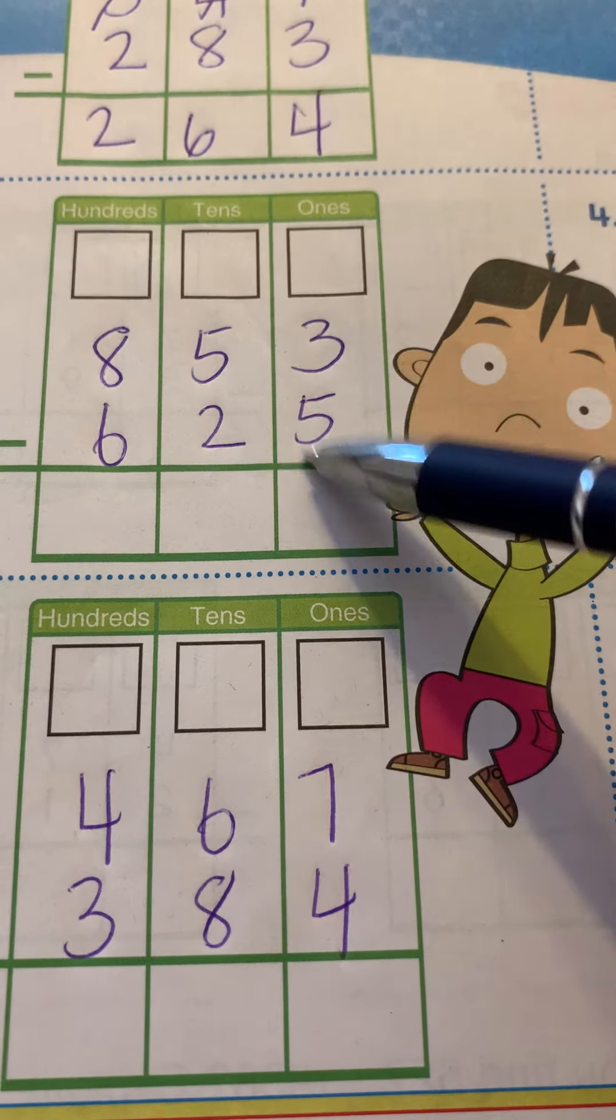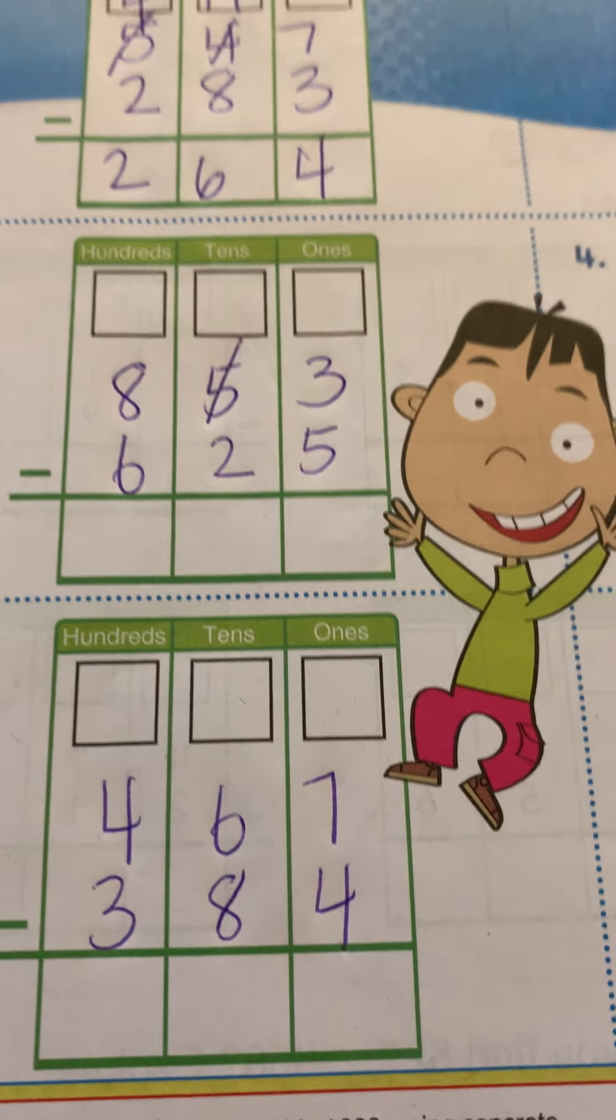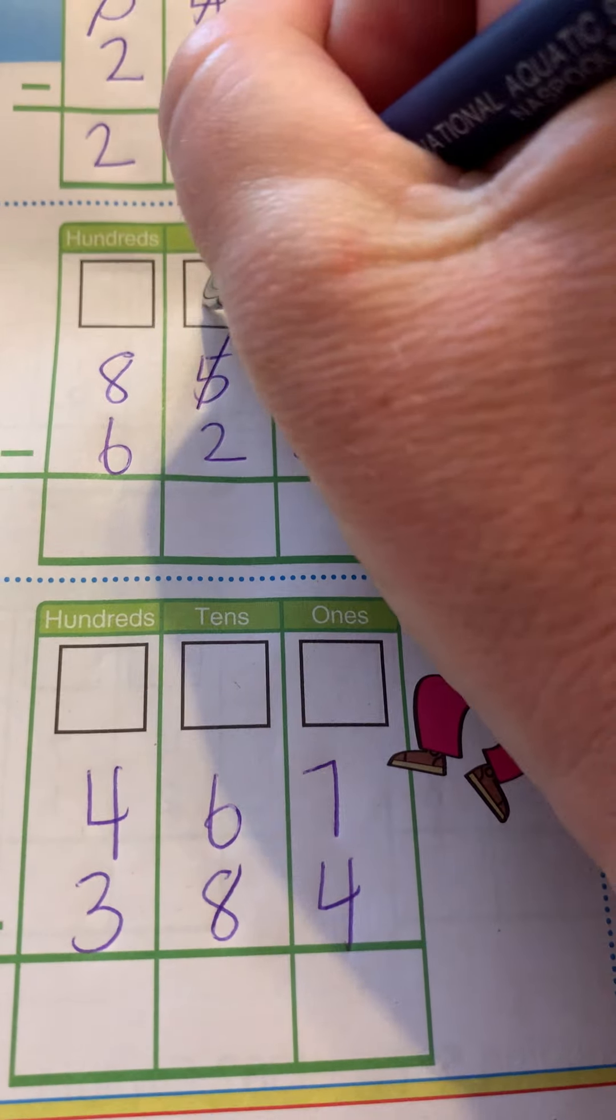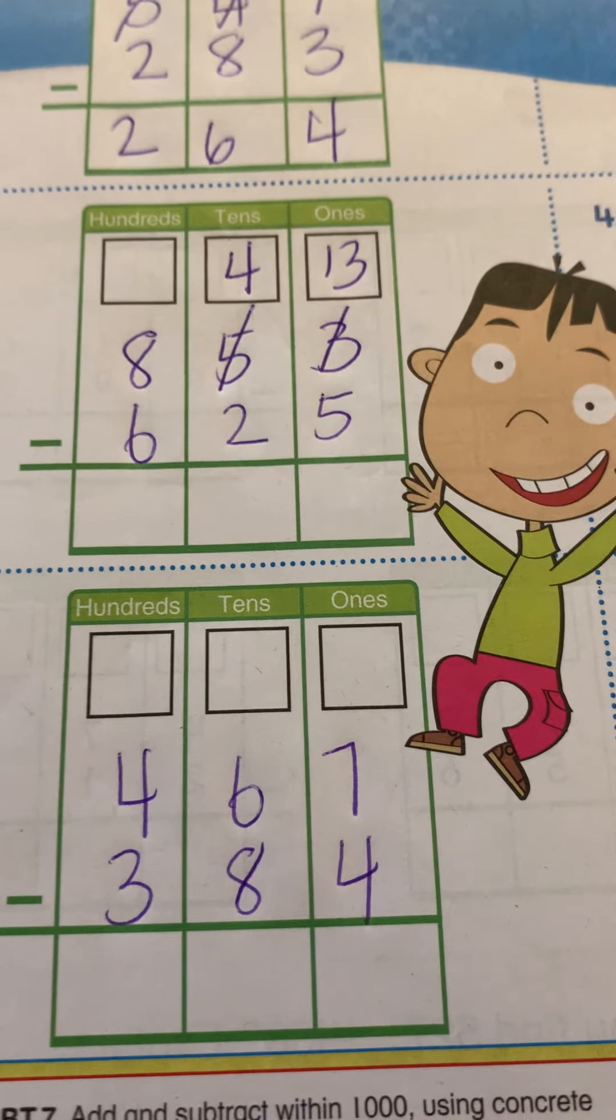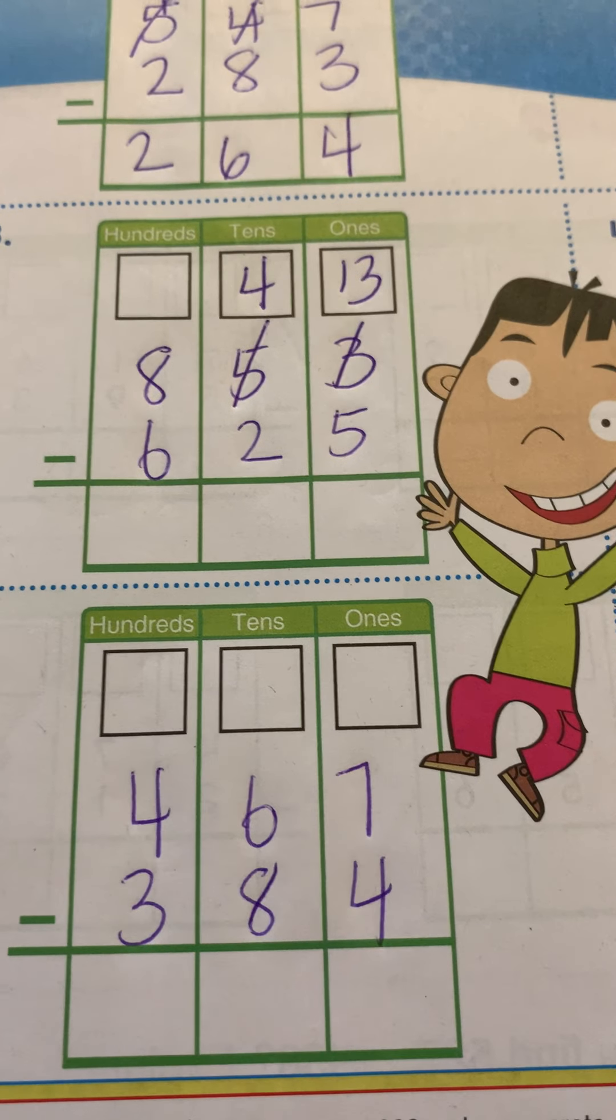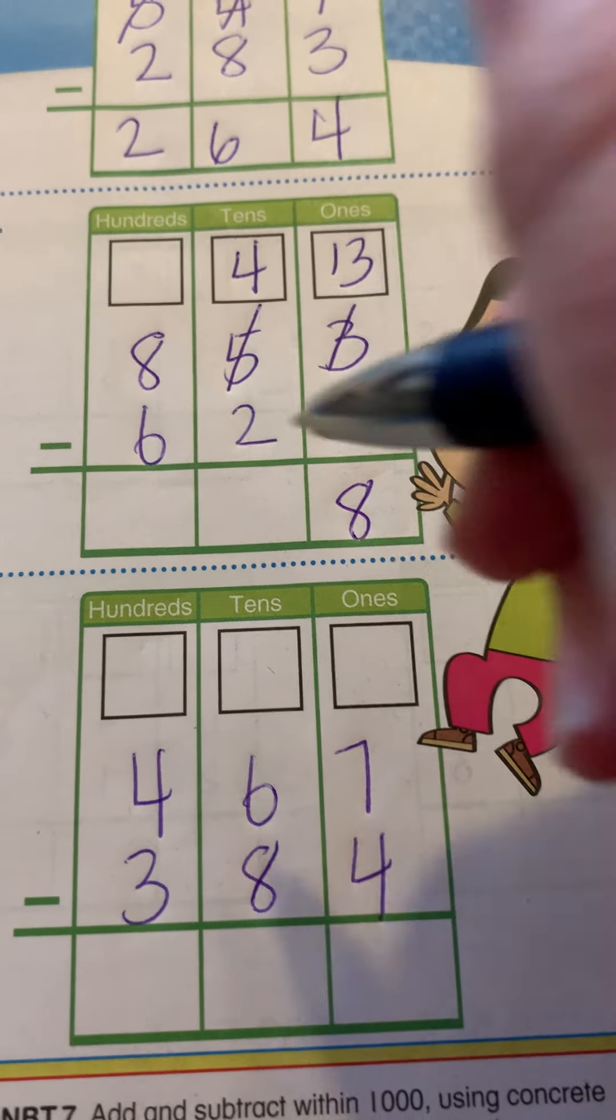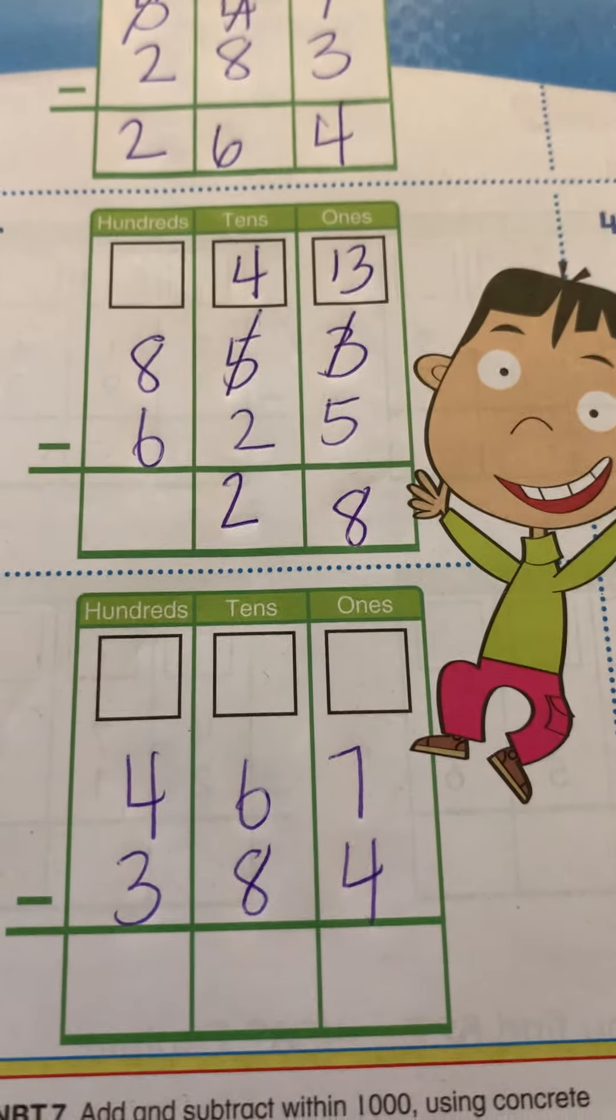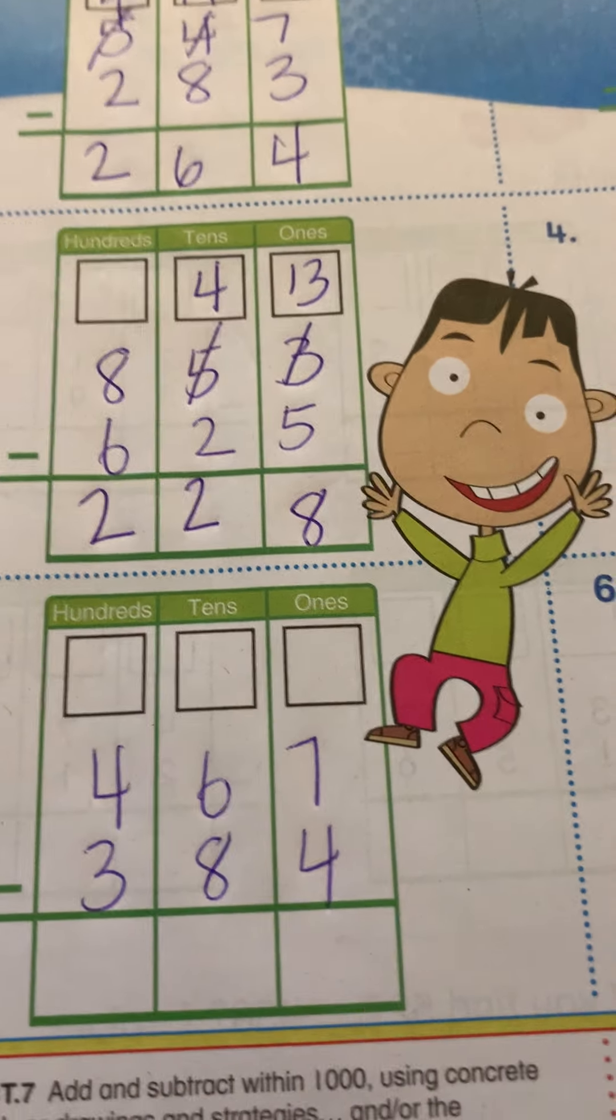So let's start three minus five. I can't. I cross off the five and you guys made it a four. And we made the three a 13. So 13 minus five is, and you should already have it written. Eight. And four minus two is a double. Two. And eight minus six is two.